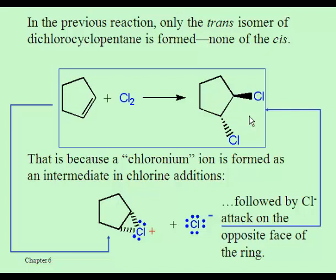We get trans when we do reactions on alkenes because the mechanism for this reaction involves one of the chlorines adding to temporarily make a three-membered ring attached to the five-membered ring. These dashes imply that chlorine is coming from the backside and forming this little ring adjacent to the one we already had. That's called a chloronium ion — it's positive, which is why that '-ium' is on the end.